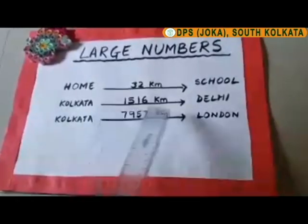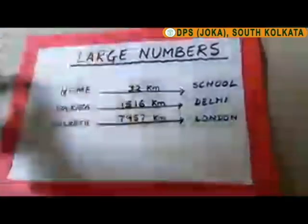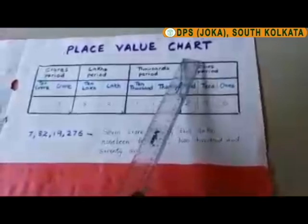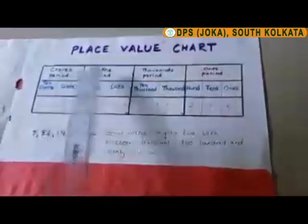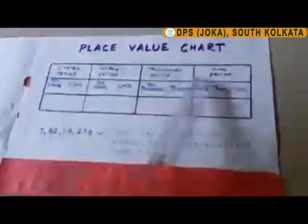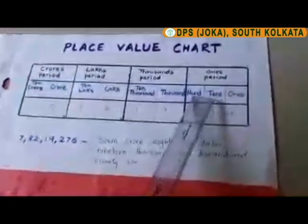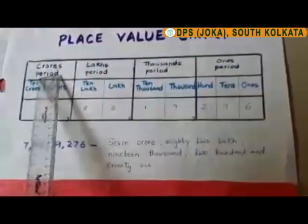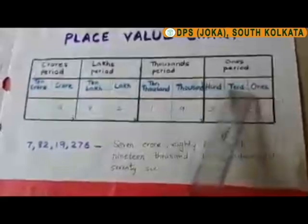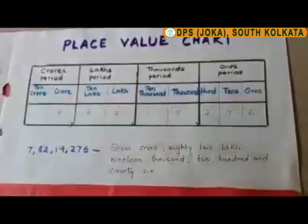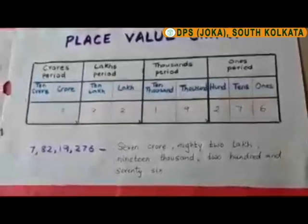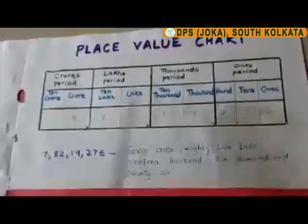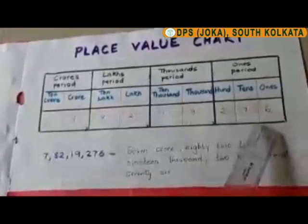Now let's see how we can read large numbers. This is the place value chart. A place value chart is divided into periods. The ones period has three places, the thousands period has two places, the lakhs period has two places, and the crores period has two places. The commas in numbers group the digits into periods, and these periods help us to read a number.